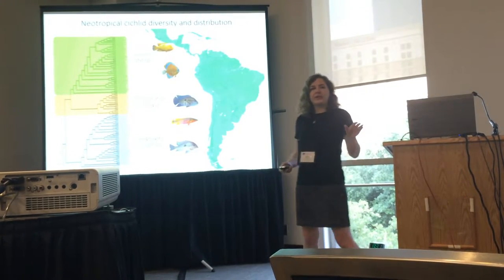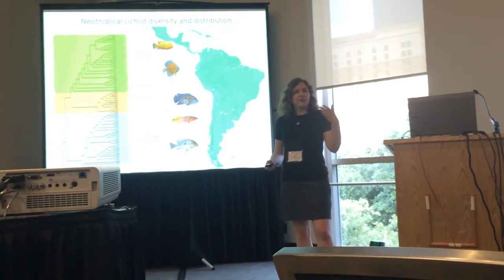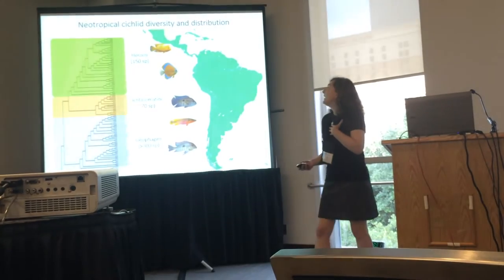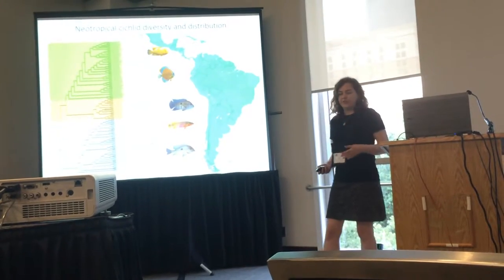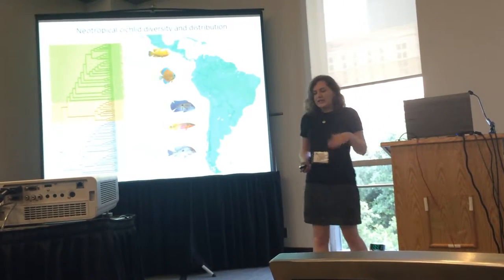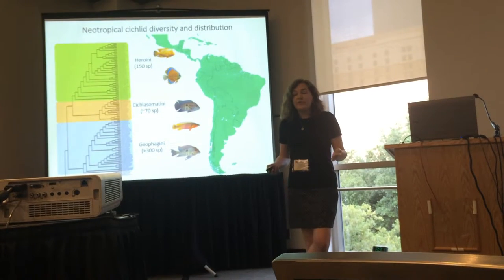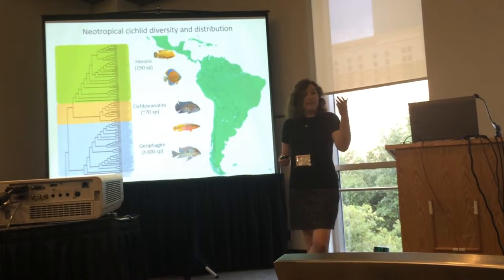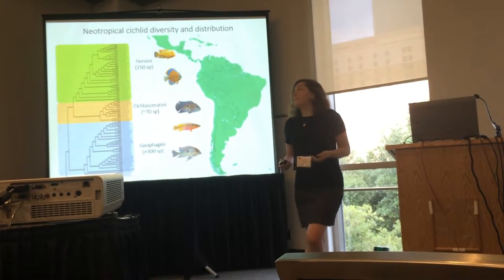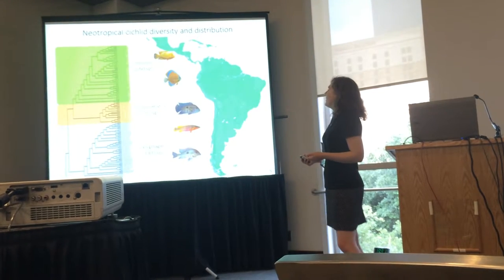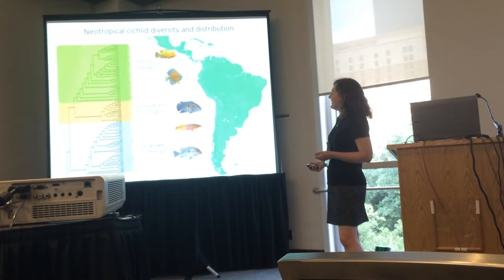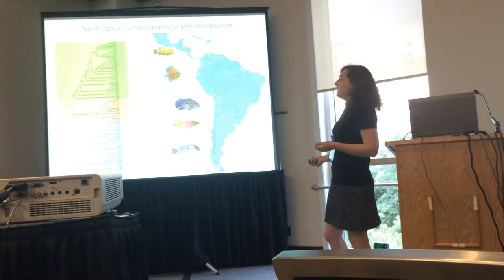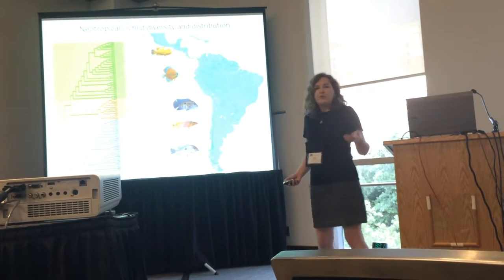There's been a lot of work characterizing these sorts of processes in African cichlids. I'm interested in neotropical cichlid diversity. While these cichlids aren't as diverse as their African relatives, they do still have a considerable amount of species richness. There are three major clades of cichlid.